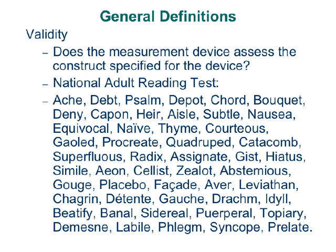Sometimes in psychology the constructs we use are quite abstract, and it's very difficult to figure out exactly what measurement tool should be used to assess them. In the physical sciences, when you're talking about temperature or distance, it's fairly easy from a validity standpoint to design an instrument to measure those things because they are very clear. There is a great deal of reliability and theory about what temperature is, for example.